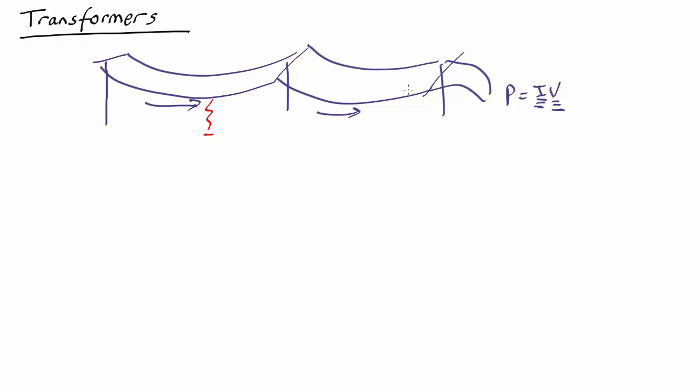So the crucial thing is you want a very high voltage for your power lines, and then you want to reduce it to a low voltage when you actually get into the house. And that's what a transformer does. Here's the basic idea.